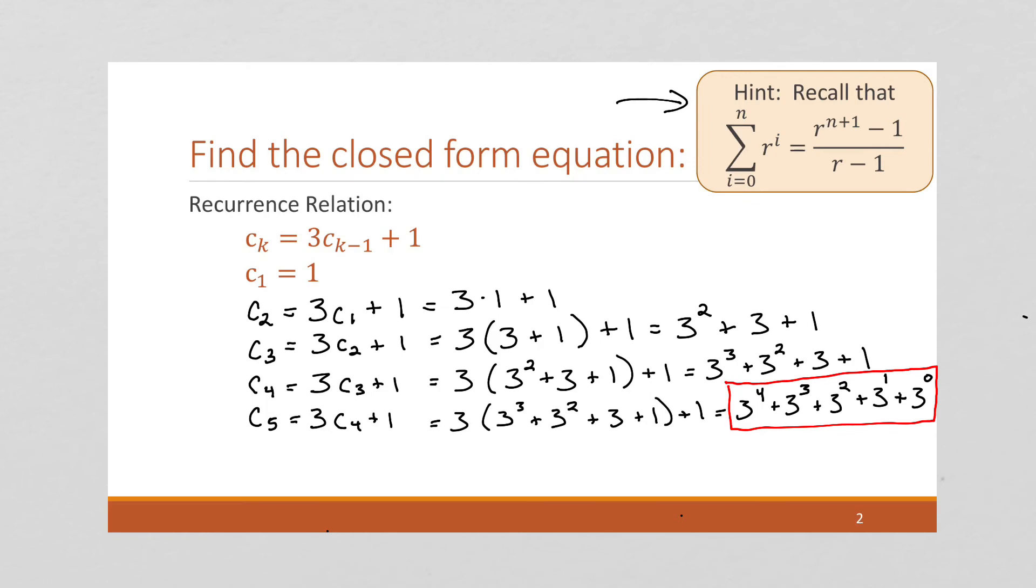So what we can do is we can notice that c to the n is going to be 3. So notice here we had c to the 5 gave us 3 to the 4.